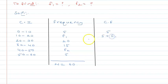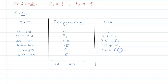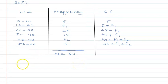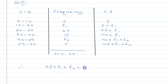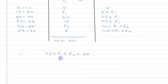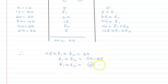So F1. 5 plus 20 is 25 plus F1. 25 plus 15 is 40 plus F1. 40 plus F1 plus F2. Then 45 plus F1 plus F2. This last term is equal to 60, so F1 plus F2 will be equal to 60. So 45 plus F1 plus F2 equals 60, meaning F1 plus F2 equals 15. This is our Equation 1.